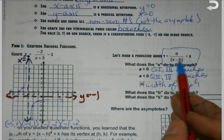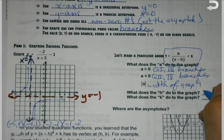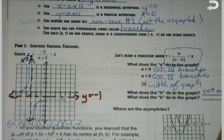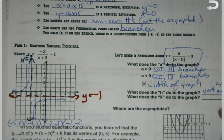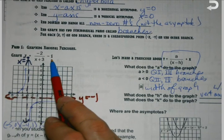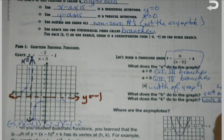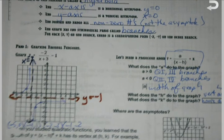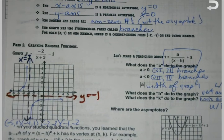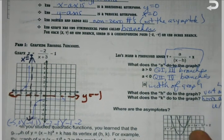What does h do to the graph? It either tells me my vertical asymptote, but it also is going to be my left or right shift. K, the value on the end, as you can see here, is going to be my horizontal asymptote, at least for the time being. And it's going to be my up and down shift. That's a lot of stuff to take in. But it gives us a lot of good information that we can use to make a graph, even if we don't have a graphing calculator.